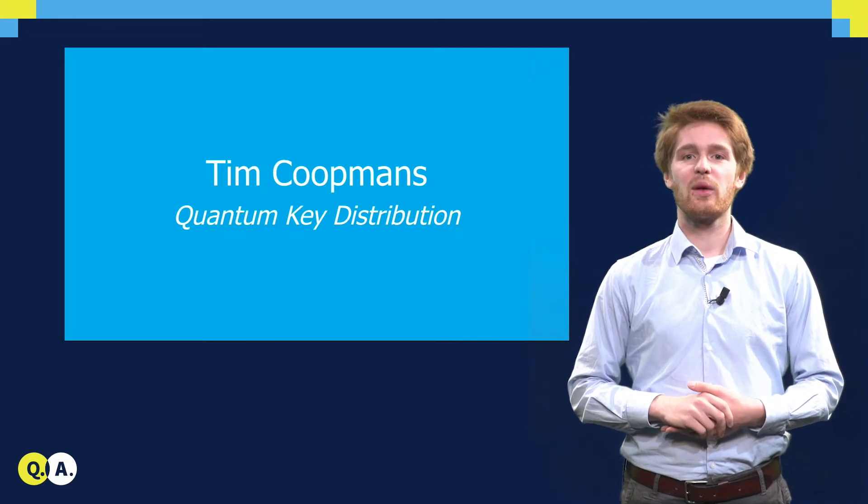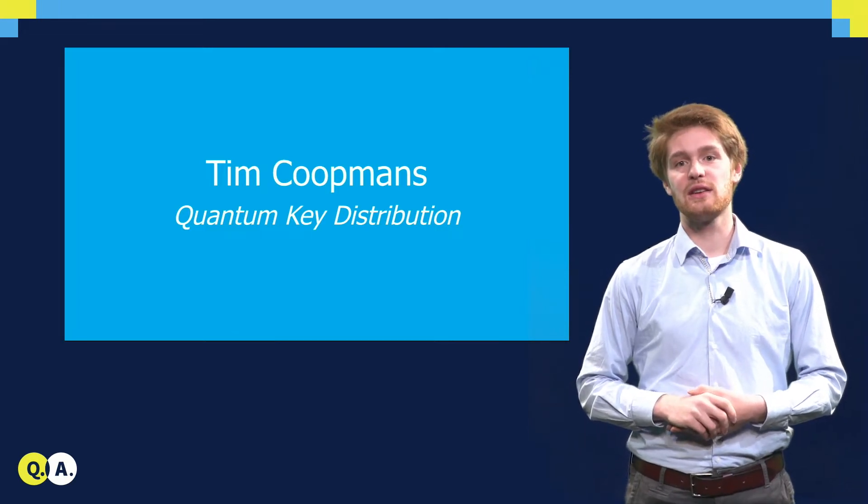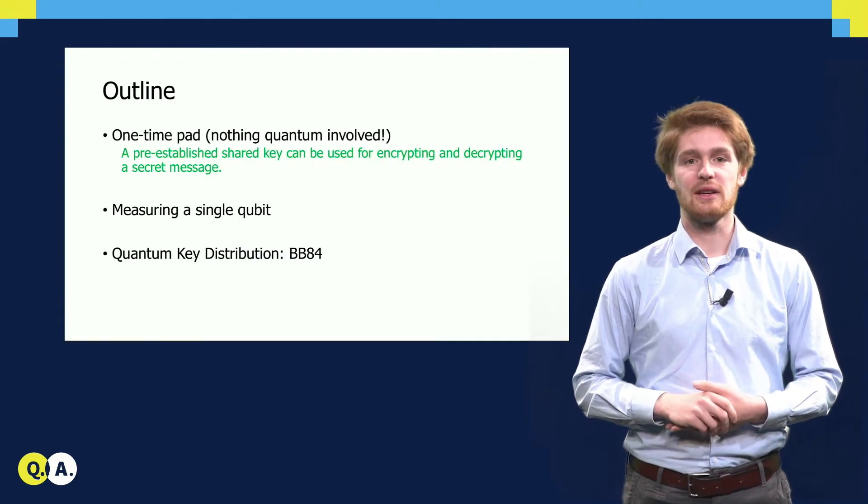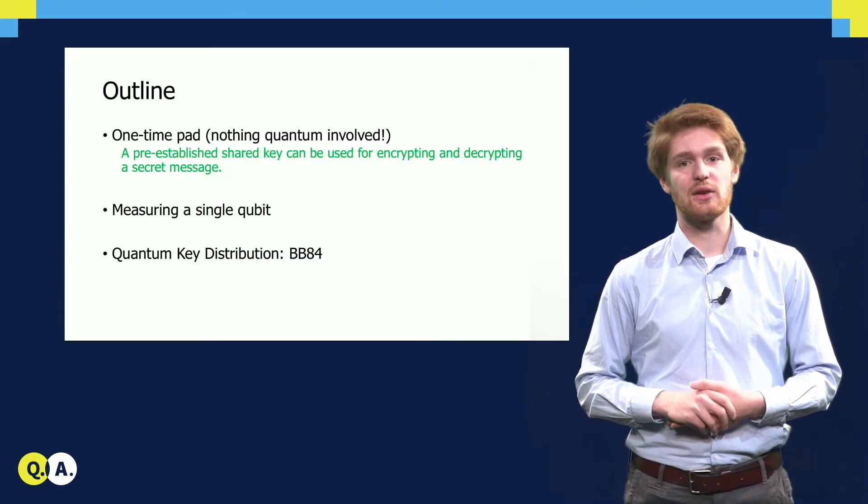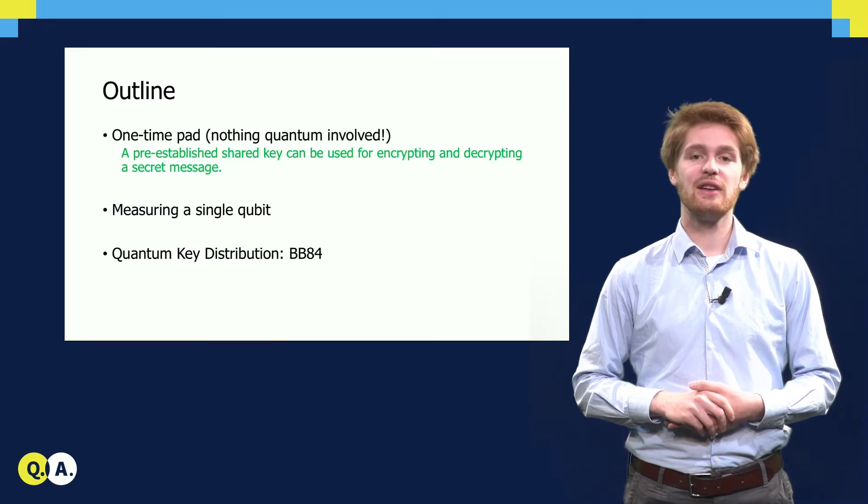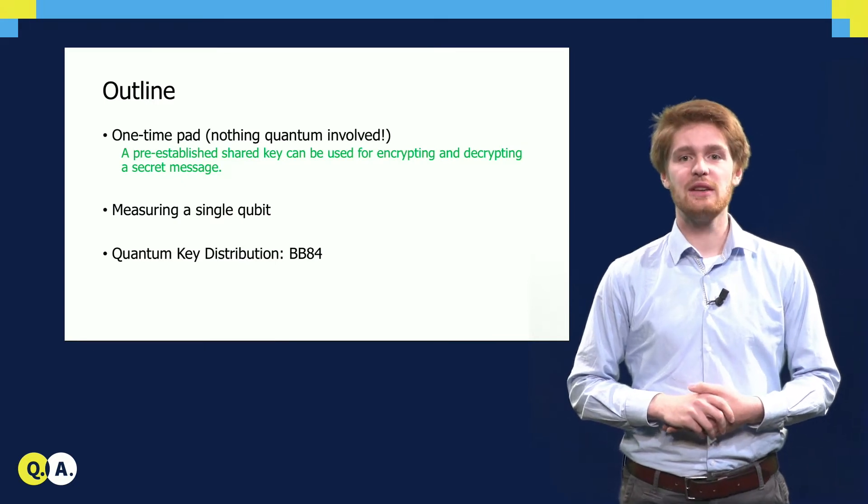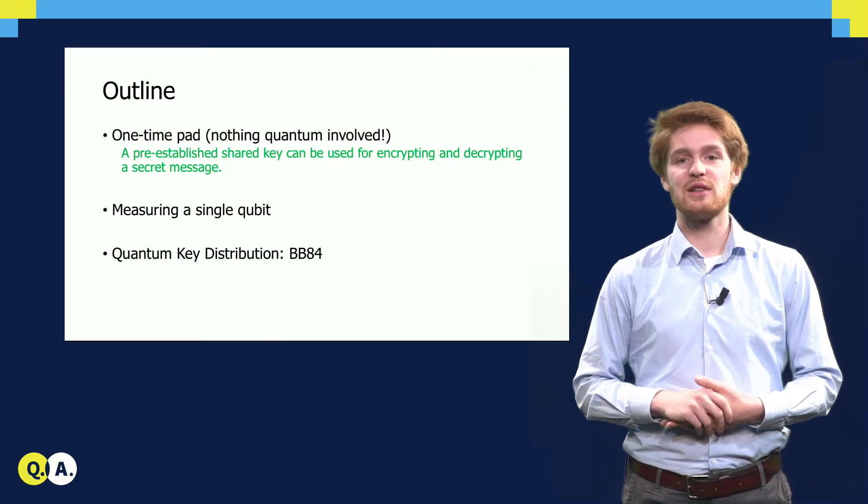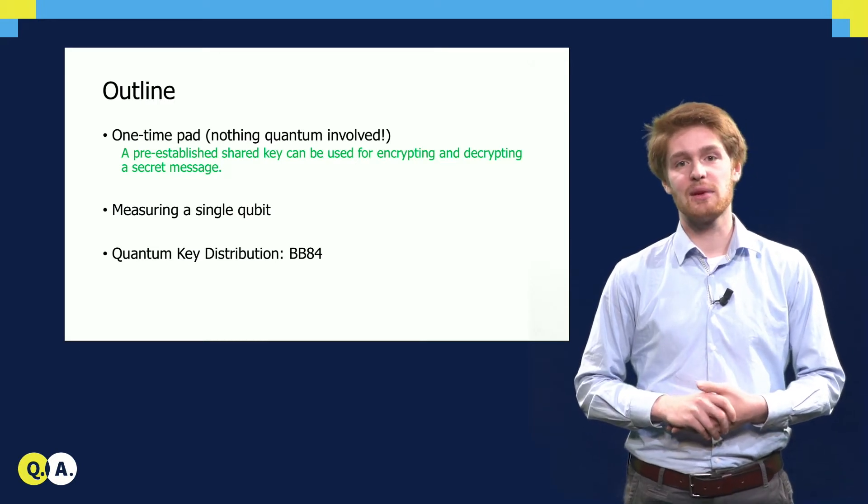In the previous video, we saw how the one-time pad scheme can be used to send a secret message securely. There is nothing quantum about the one-time pad scheme, it only involves classical zeros and ones. In this video, we will use a quantum key distribution scheme to generate a secret key, which can then be used in the one-time pad scheme for sending a message securely.